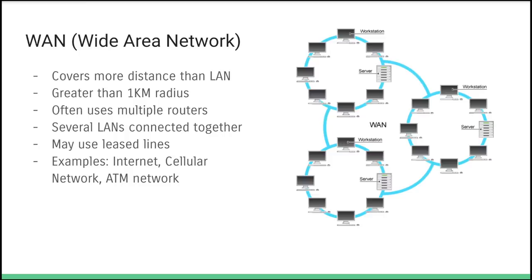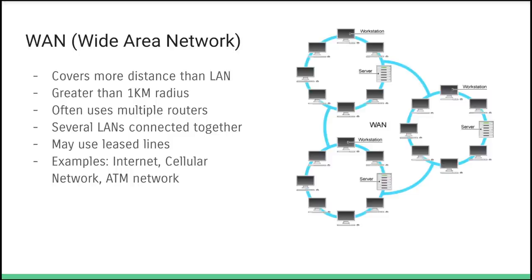The next type is a wide area network, or WAN — basically the same as a LAN except it covers a much greater radius. It might be several LANs stitched together using routers, or different buildings connected through a network provider. Examples include the internet, cellular networks, and ATM networks. Fundamentally, a WAN is the same thing as a LAN but with a larger radius.